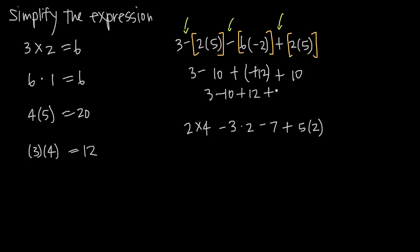So this becomes 3 minus 10 plus 12 plus 10. We can add all our positive numbers together: positive 3 plus positive 12 is 15, plus positive 10 is 25. Our single negative number is negative 10, so we have 25 minus 10, which of course equals positive 15.